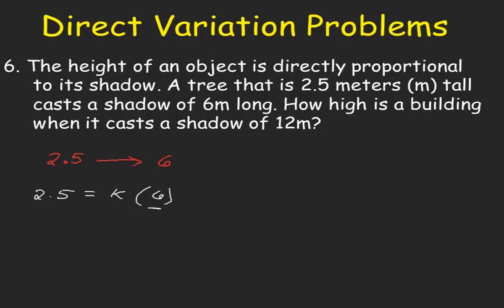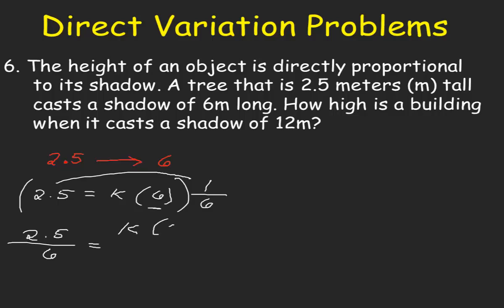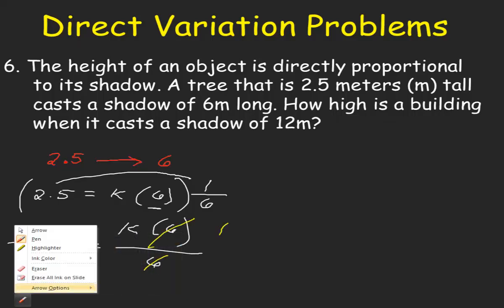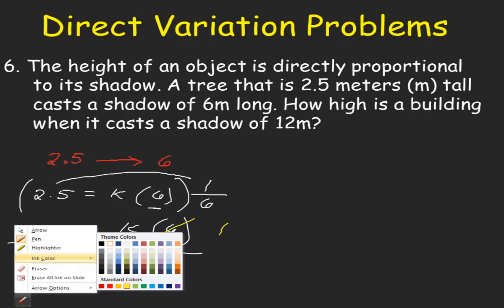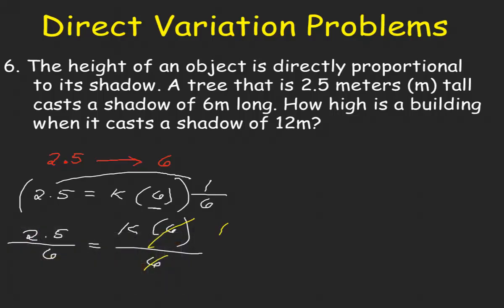To cancel out 6, divide both sides of the equation by 6. So we have 2.5 all over 6 equals k times 6 all over 6. So 6 divided by 6 is equal to 1. And 2.5 divided by 6 gives us 0.417. And this is our k.